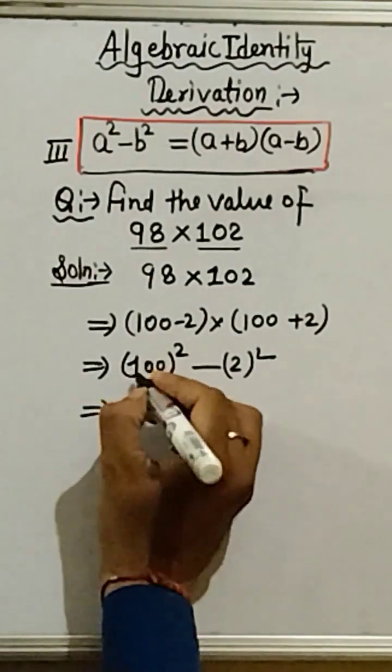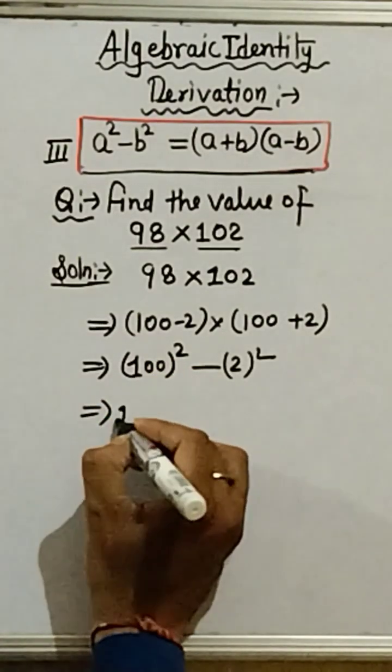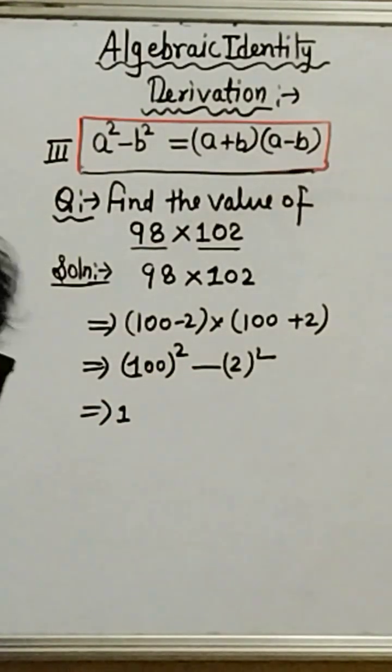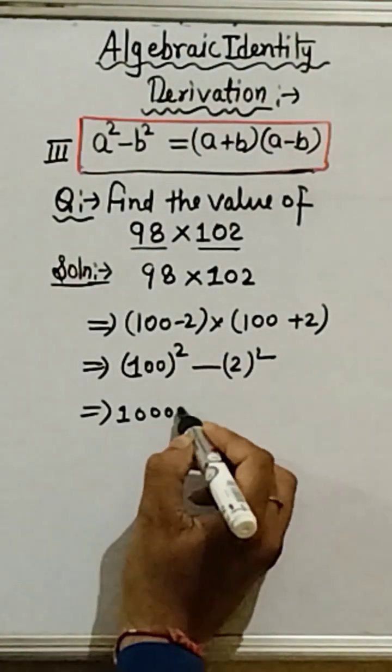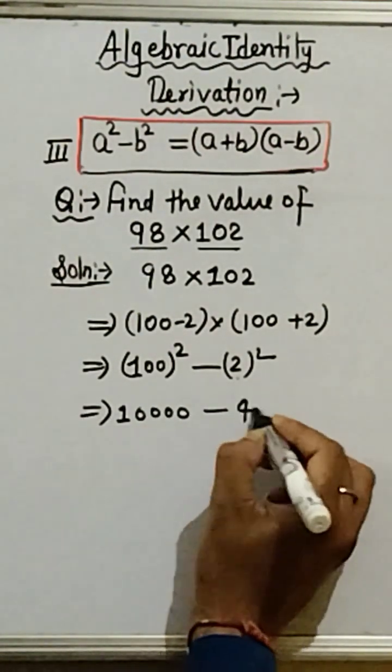Now, here see that 1 square is 1 and double 0 square, square of double 0 we get 4 times 0, understand. And 2 square is equal to 4.